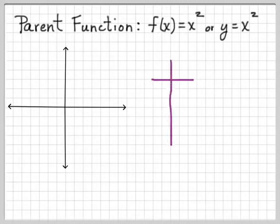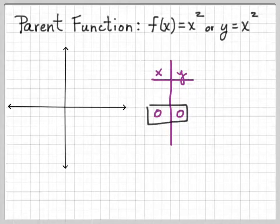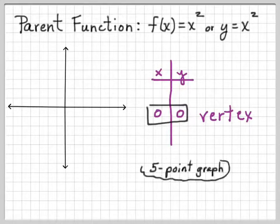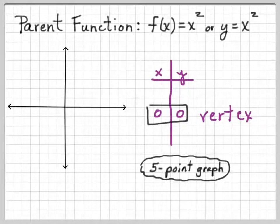Let's start off with a graph in x and y, beginning with our parent graph y = x². Our vertex is going to be at (0, 0). We're going to put the vertex in the middle of the chart and put a little box around it so that we don't lose sight of it. We're going to do what we call a five-point graph. With absolute value you only needed the vertex and two other points — one to the left and one to the right — because you were graphing straight lines. With a parabola, you're graphing a curve.